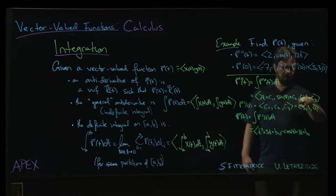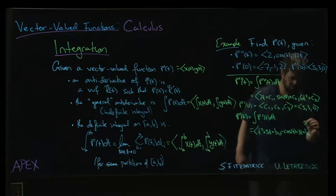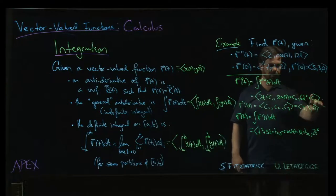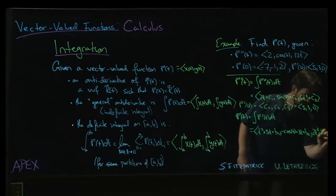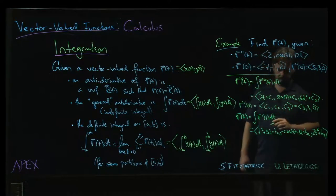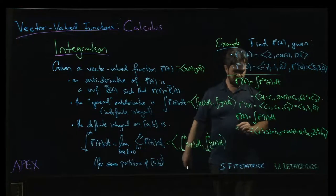And in the last term, 6t squared, that's going to integrate to 2t cubed. C3 was 0, so we don't get a term from that. But we do get possibly a b3. We might get a constant there, right?